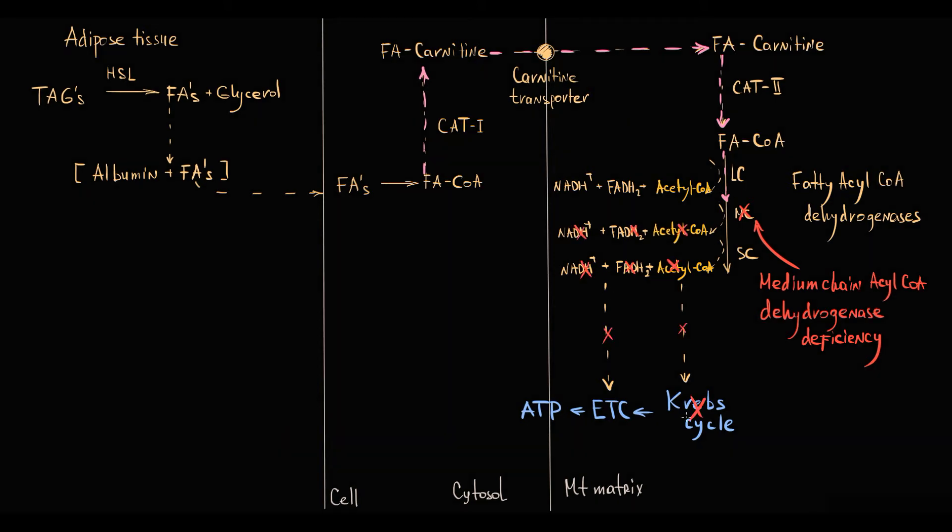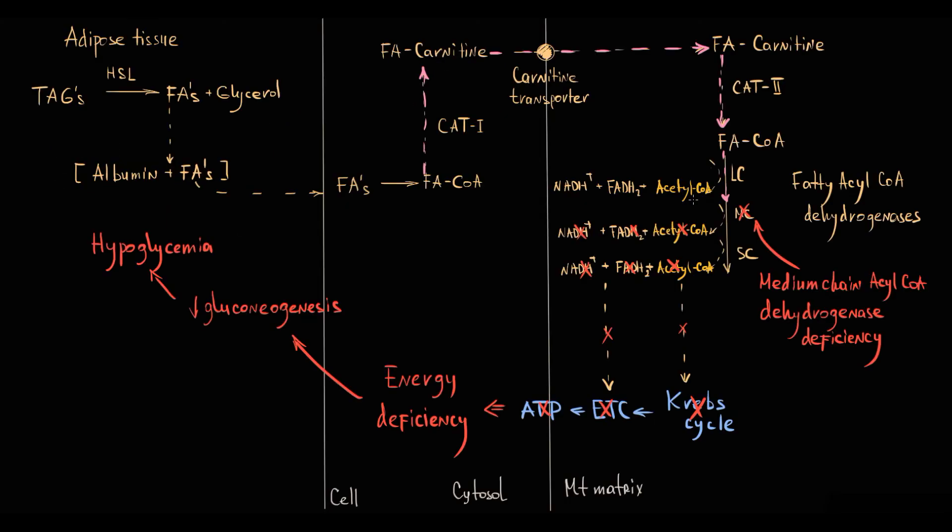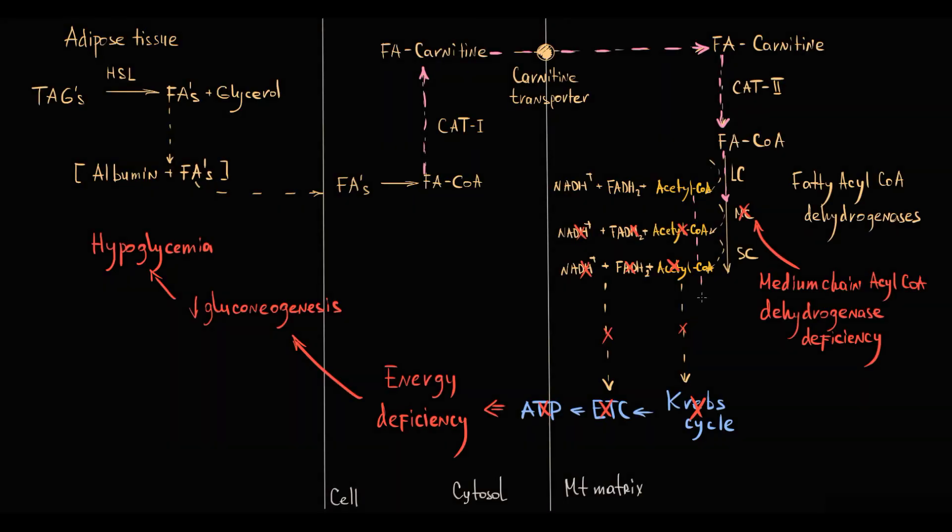Tissues are in energy-deficient state, liver tissue does not have enough energy to provide gluconeogenesis, so this cause hypoglycemia. And in case of prolonged fasting, mitochondria begin massive uptake of fatty acids that degrade only to a medium-chain.